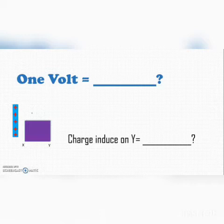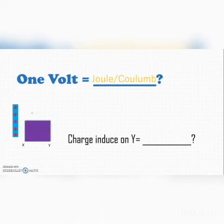Next question: 1 volt is equal to joule per coulomb. Here we have a figure with a block at positions X and Y, and a rod. The charge that appears on that block is a positive charge.